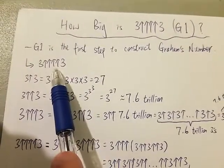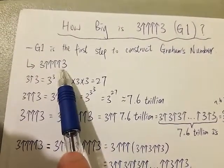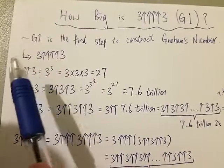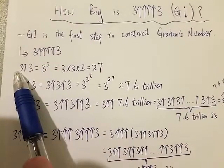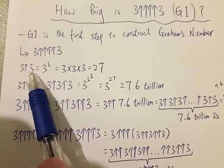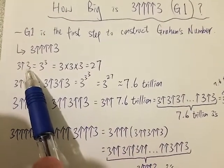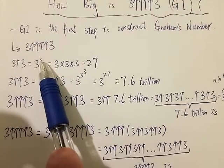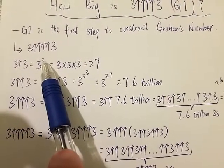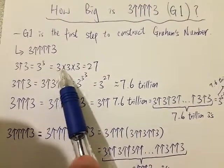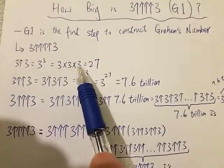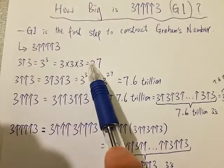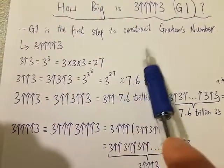So what does this up arrow notation mean? So 3 arrow 3 just means 3 to the power of 3, which is 3 times 3 times 3, which is 27. Simple.